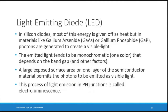In silicon diodes, recombination energy is given off as heat. For LEDs, materials like gallium arsenide or gallium phosphate are used — in these, the released energy is in the form of photons creating visible light. The emitted light tends to be monochromatic (one color), depending on the wavelength, which is determined by the band gap. A large exposed surface area allows photons to be emitted as visible light.